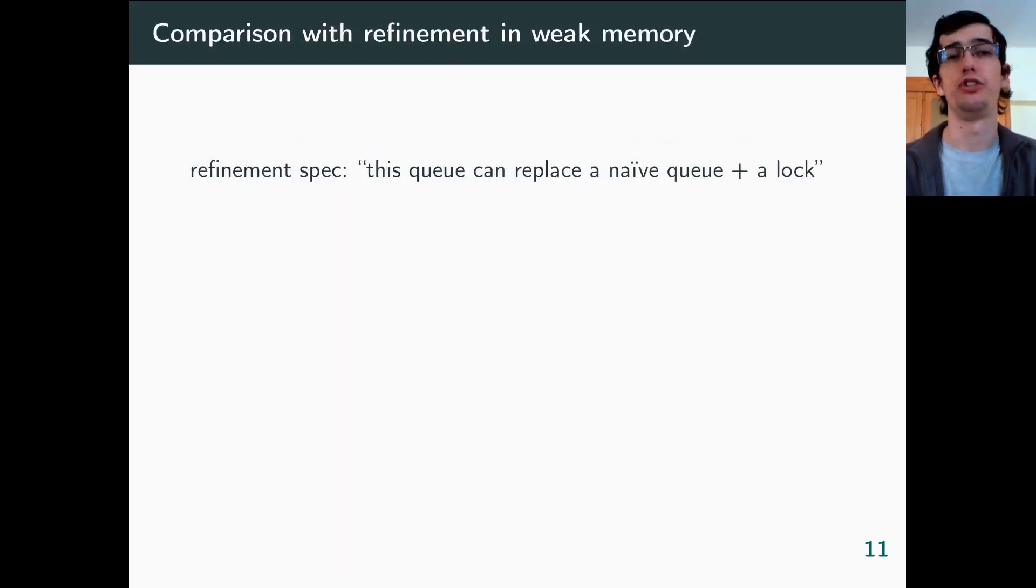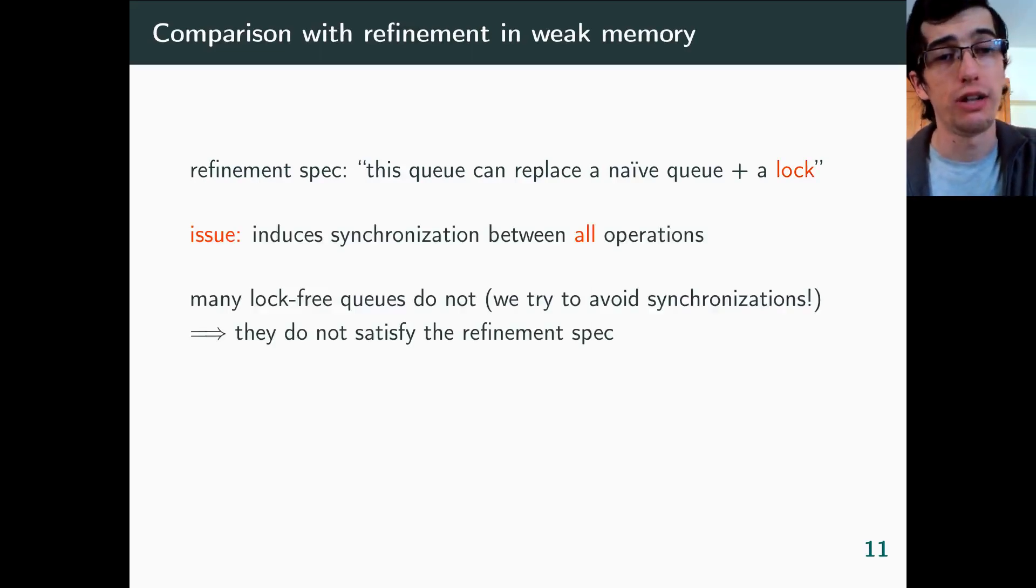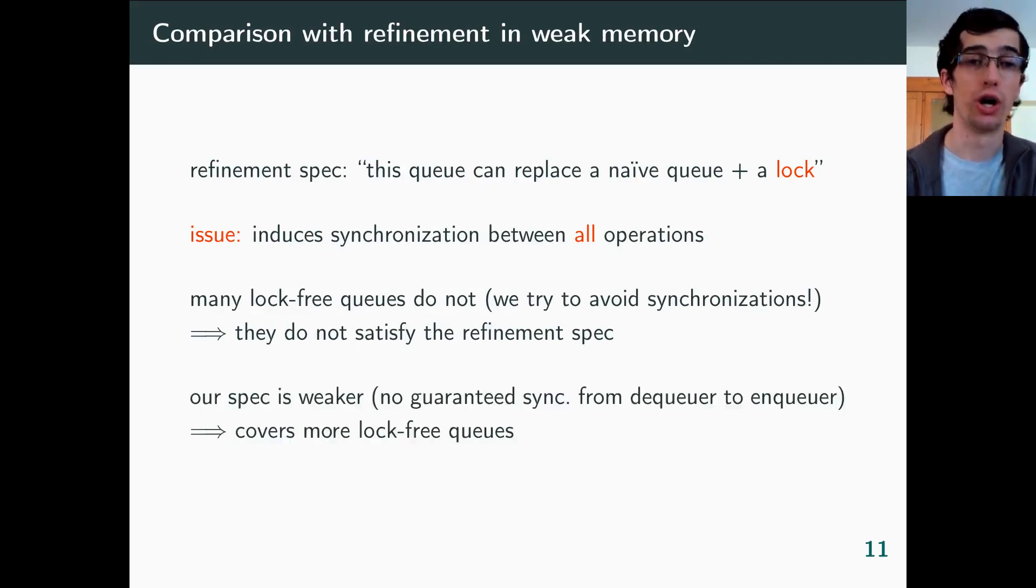I'd like to draw your attention to something. You may wonder how this approach to specification compares with refinement. In a typical refinement-based spec, you will say something like, this queue can be used everywhere we can use a naive queue protected by a lock. But in weak memory, this spec has a shortcoming. The lock induces synchronizations between all pairs of operations, even though many lock-free queues do not guarantee them, because precisely, we try to reduce unnecessary synchronizations. By contrast, our spec is weaker. For instance, it does not guarantee any dequeuer to enqueuer synchronization. So we can specify more implementations.